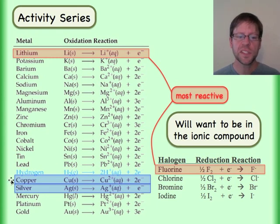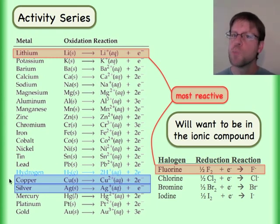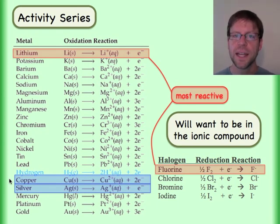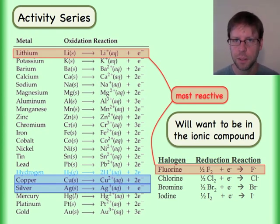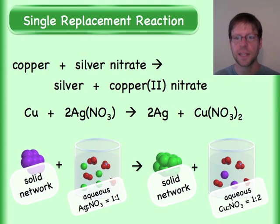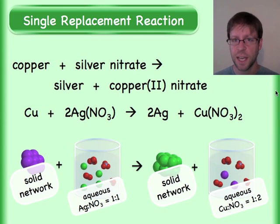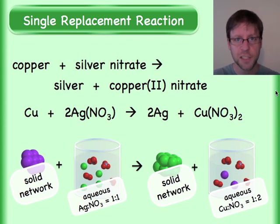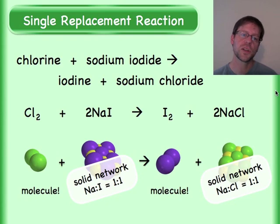You will see that copper is above silver, so copper is the more reactive one and will ultimately end up in the ionic compound. Verify that at the end of the reaction, copper did indeed end up in the ionic compound location. Here's one where I'll show you with a halogen.